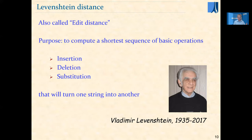This algorithm is called the edit distance, or also the Levenshtein distance, from the name of Soviet mathematician Vladimir Levenshtein, who published it in the mid-1960s. The definition: compute the shortest sequence of basic operations that will turn one string into another. The permitted operations are three: insertion of a character, deletion of a character, and substitution of a character by another.